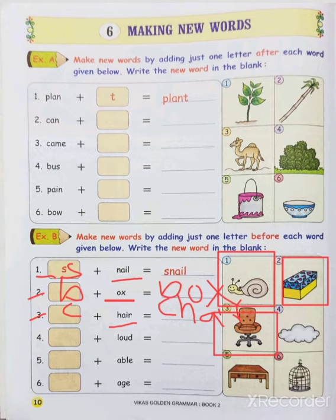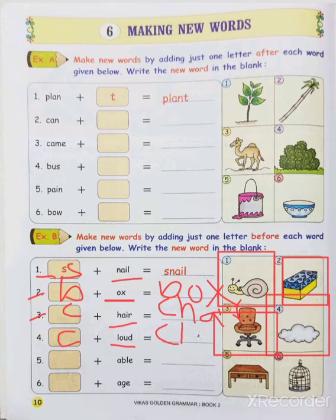Moving to the fourth one: L, O, U, D — loud. Loud means zor se bolna. What is the fourth picture given here? Cloud. What is the spelling of cloud? C, L, O, U, D. By adding C before, we get another new word: C, L, O, U, D — cloud.